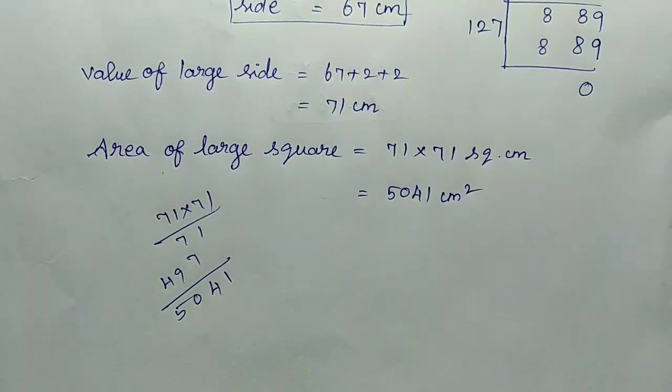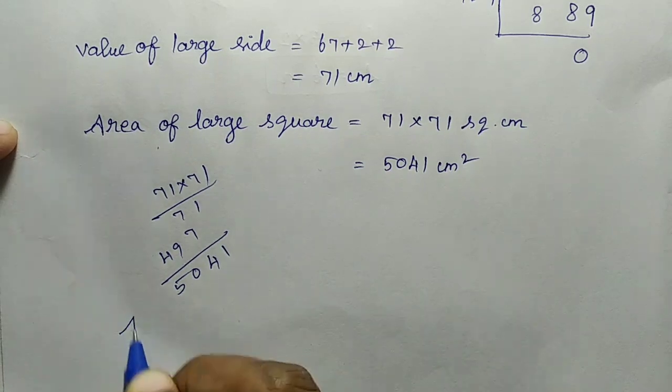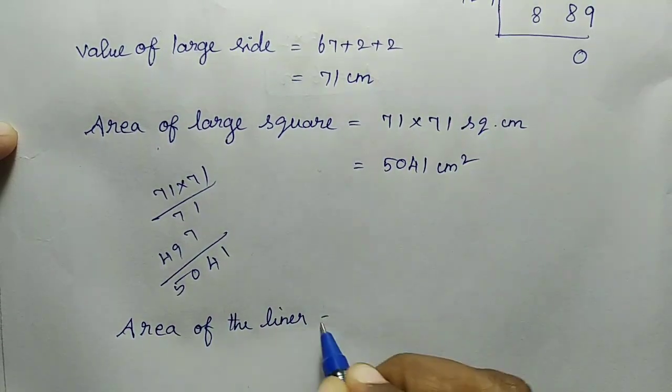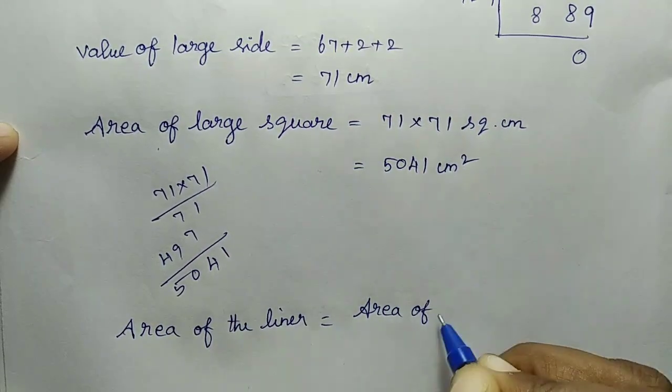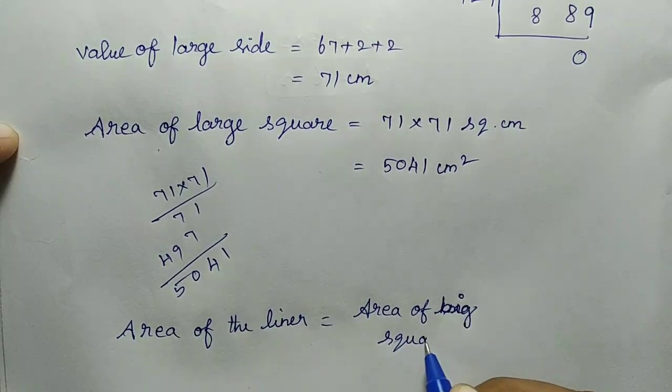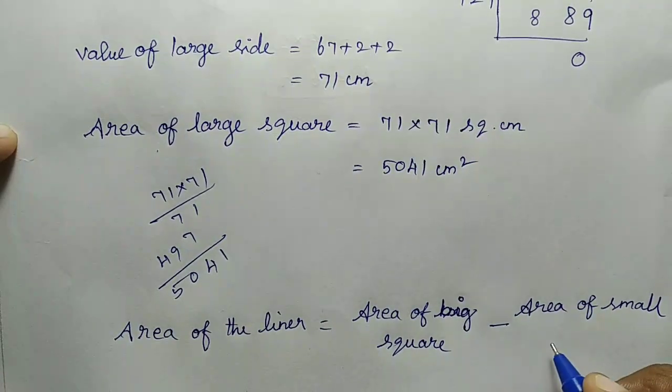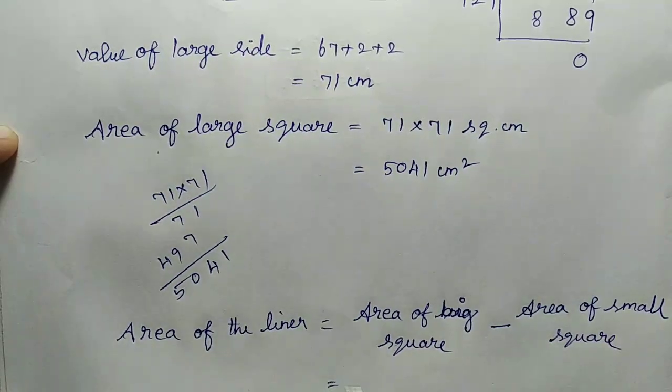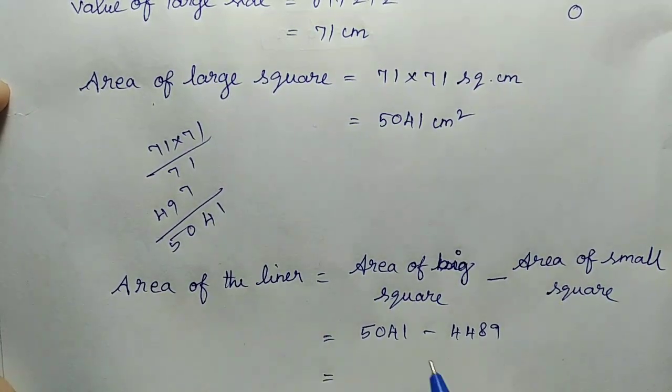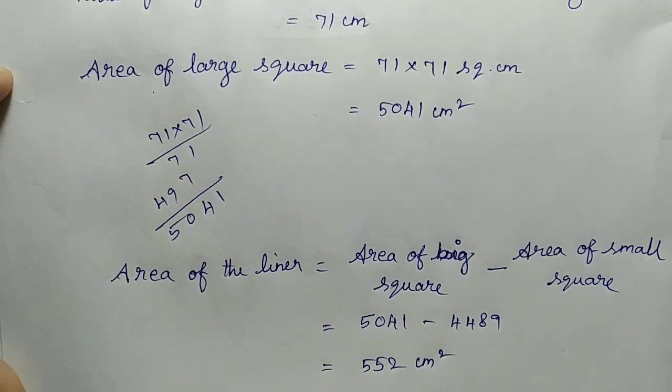Now for the border liner, the photo frame area. Area of the liner equals area of large square minus area of small square. So 5041 minus 4489 equals 552 cm square.